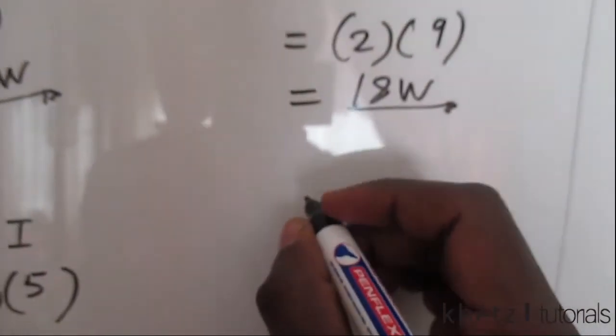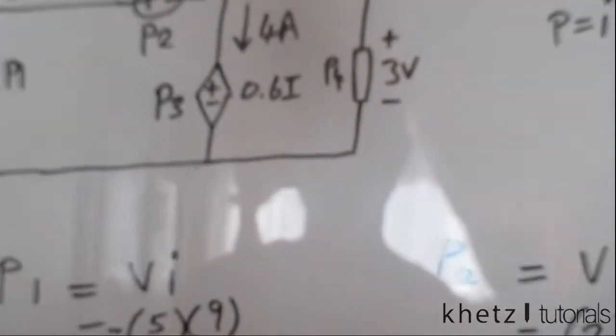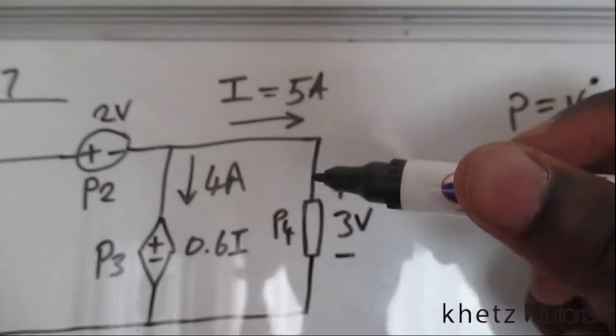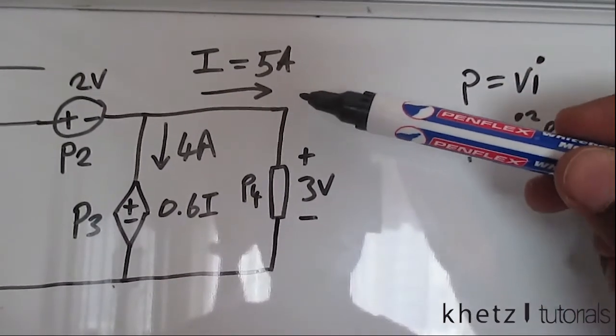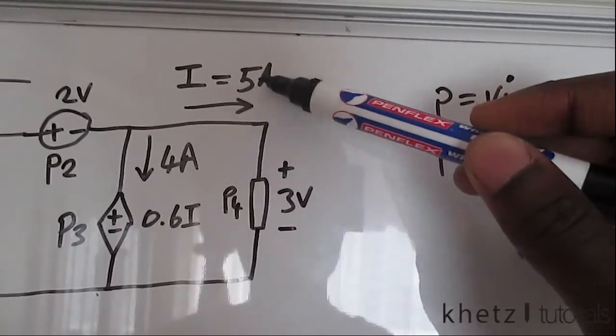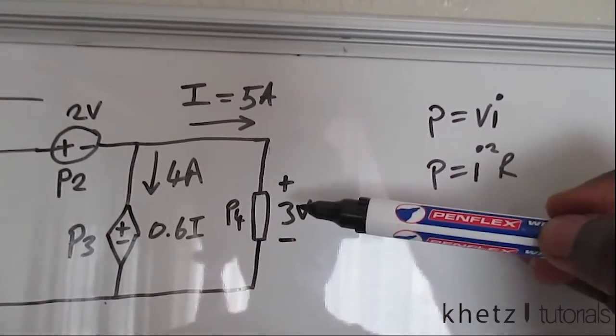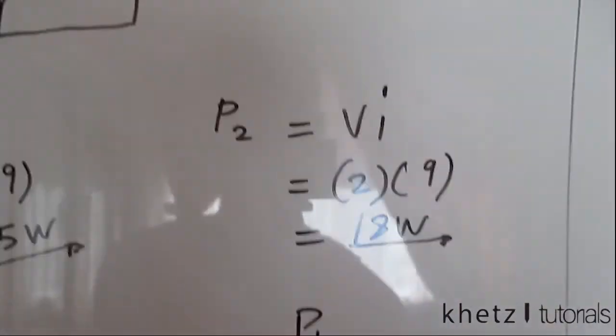Moving on to P4. P4. Now P4 is over here. The current going through P4 is 5, given as I. It's 5. And the voltage across it is 3 volts. And the current goes through the positive first. So I leave it like that. So just plug it in again.